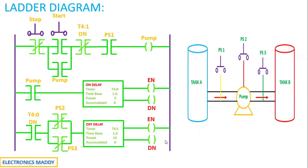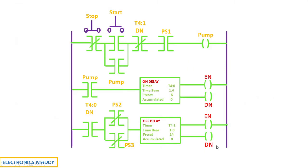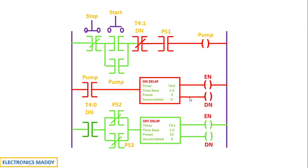Now the process continues. Since the done bit goes high, it opens the normally closed contact with the same address in the pump rung. Since this is open, the current is blocked at this path and there is no chance the current can flow through the pump — as a result, the pump stops. Since the pump stops, the same address also de-energizes the latch contact, so the pump stops there as well. As a result, the on-delay timer is de-energized, the enable bit goes low, and consequently the done bit also goes low. Since the done bit goes low, the off-delay timer rung is also blocked and the off-delay timer is de-energized.